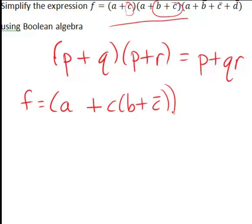So the first step becomes a plus c times b plus c bar, all still multiplied by a plus b bar plus c bar plus d bar.